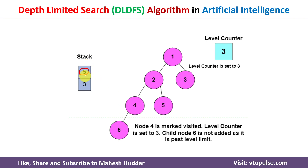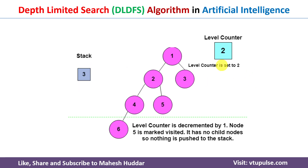Node 4 is removed from the stack. When we try to expand it, the level would increment to 3, which exceeds the limit, so we skip it. We take the next element, node 5, and try to expand it — node 5 has no children, so nothing is added. We decrement the counter by 1 since we cannot go beyond depth 2. Node 5 is the goal node, so we stop. The path in depth-limited search with depth = 2 is: 1 → 2 → 4 → 5. Previously in DFS we went all the way to node 6 and back, giving a non-optimal path. With depth-limited search we obtain the optimal path.